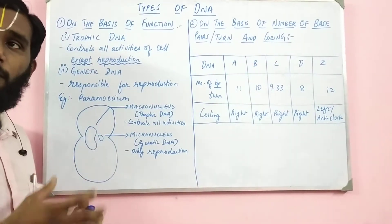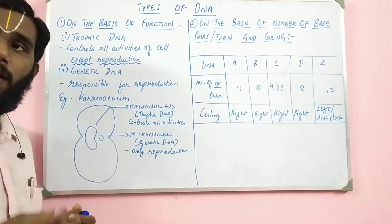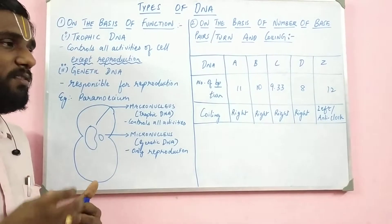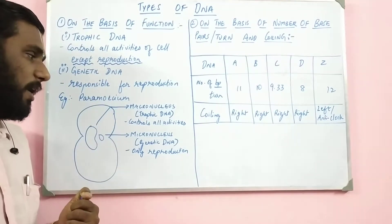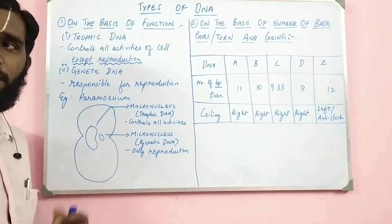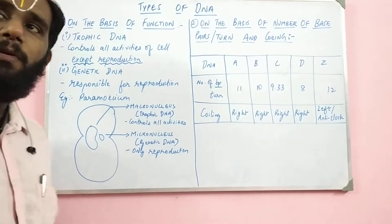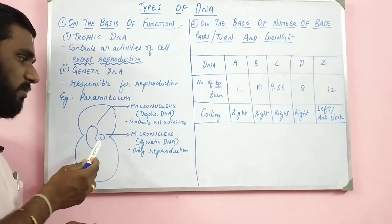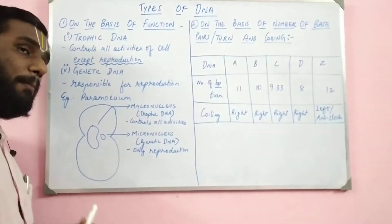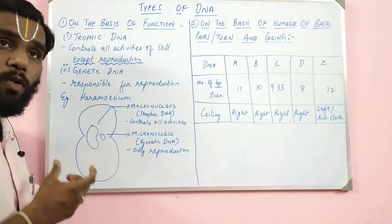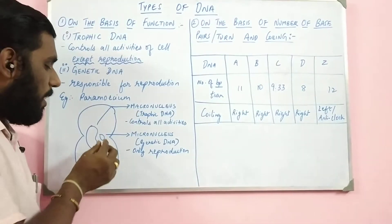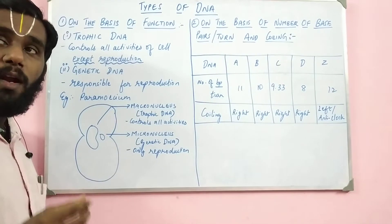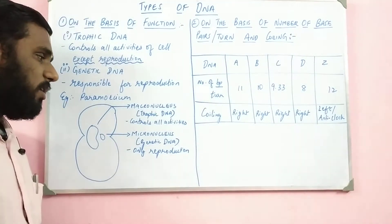Now let us see an example. Let us take paramecium — we all know about this slipper-shaped organism. Inside the paramecium, you will find two different kinds of nucleus: one bigger in size, called the macronucleus, and one which is very small, called the micronucleus.